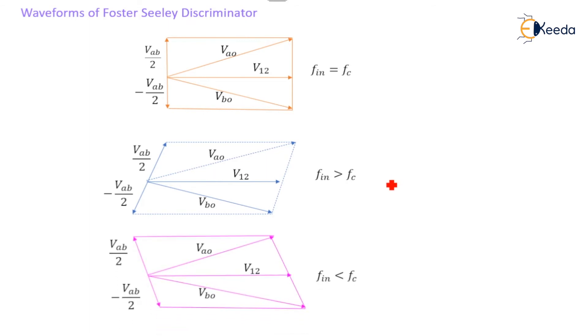Third case, when F_in less than F_c, that time lower half voltage would be larger than that of the upper half voltage. So output voltage is marching toward the negative.